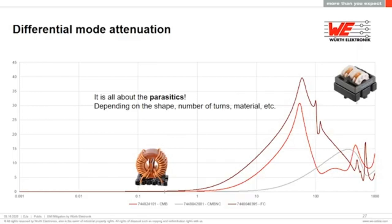For differential mode attenuation, which is more reactive or impedance based, it very much depends on shape, number of turns, and material. In short, parasitics play a key role — these are not ideal components; they have different resonances at different frequencies.